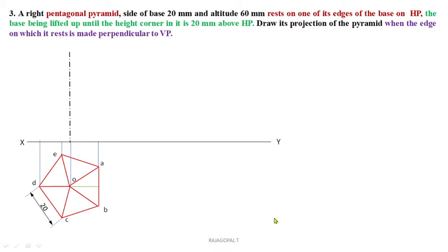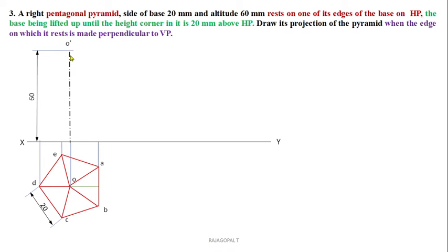Extend projectors from all corners as well as from the apex or vertex to fix the axis. The axis is represented by long dashed dotted lines — if you miss the dots, it looks like a hidden line, so always remember the difference between axis lines and hidden lines. The height of the axis is 60mm. Now join all slant edges in the simple position front view.